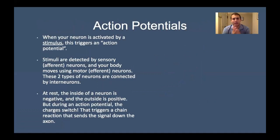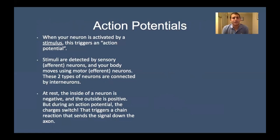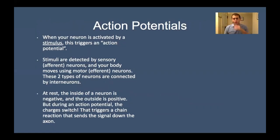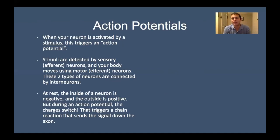Let's talk about the action potential — what exactly it is. This is really what the signal is. When your neuron is activated by a stimulus — anything in the environment — a ray of light could be a stimulus; your eye detects it, or if you hear a sound, this triggers an action potential in your neurons. Stimuli are detected by sensory neurons, which are called afferent neurons. For example, your skin has sensory receptors inside and can feel when something is touching it. Your body moves when motor neurons — efferent neurons — tell parts of your body to move. These two types of neurons are connected by interneurons. So a stimulus like light will come in through a sensory neuron in my eyes and I'll perceive it, then I can tell my legs to take me outside using motor neurons.